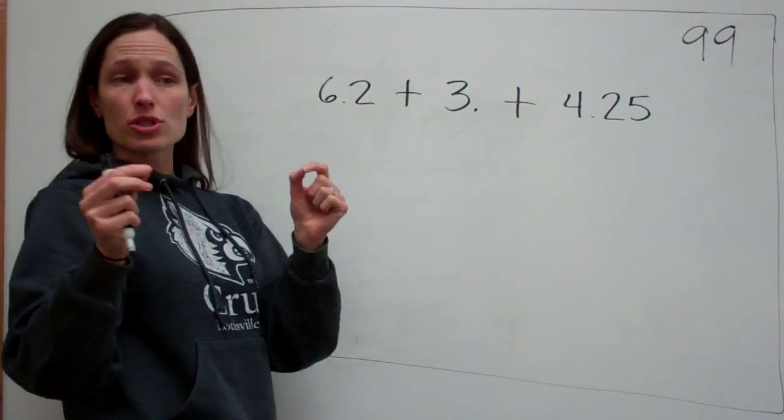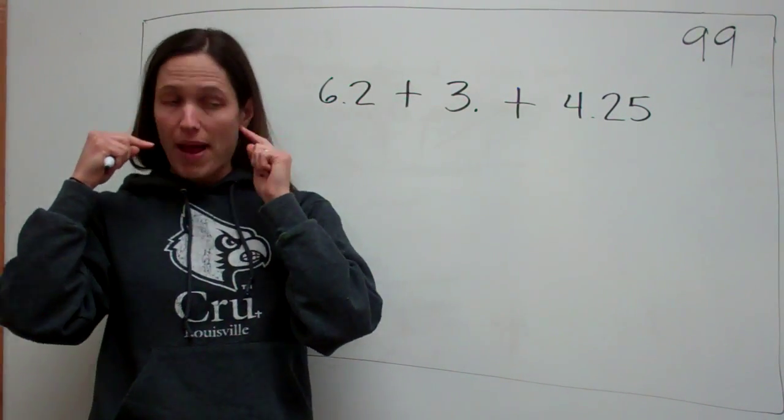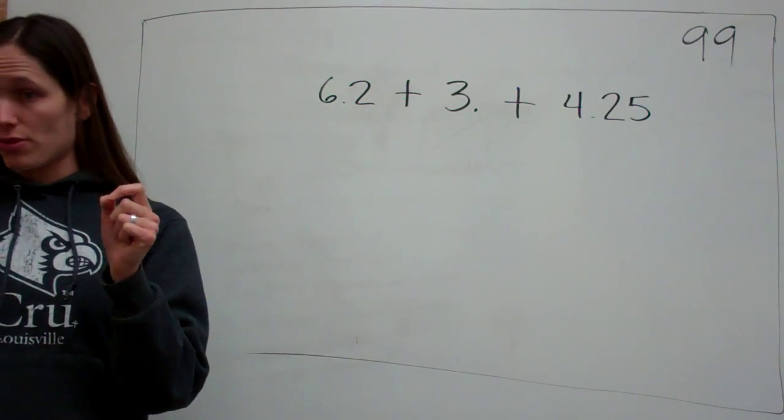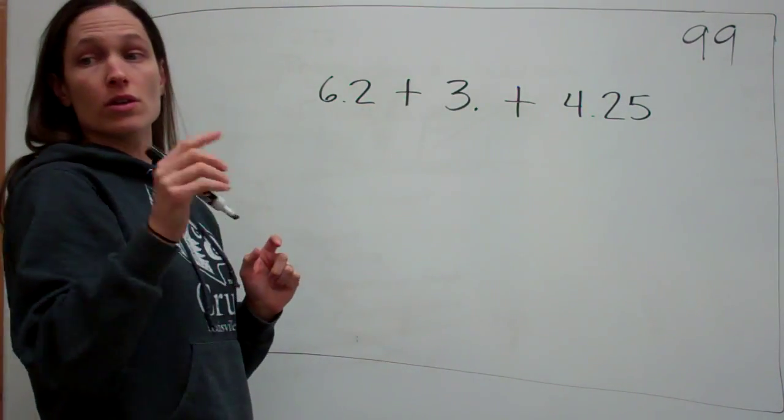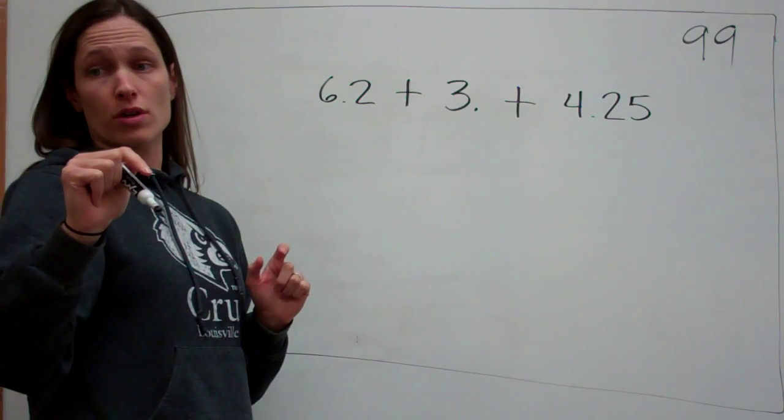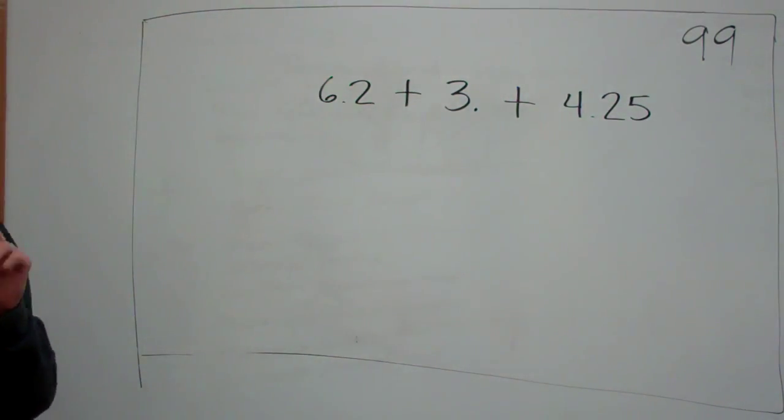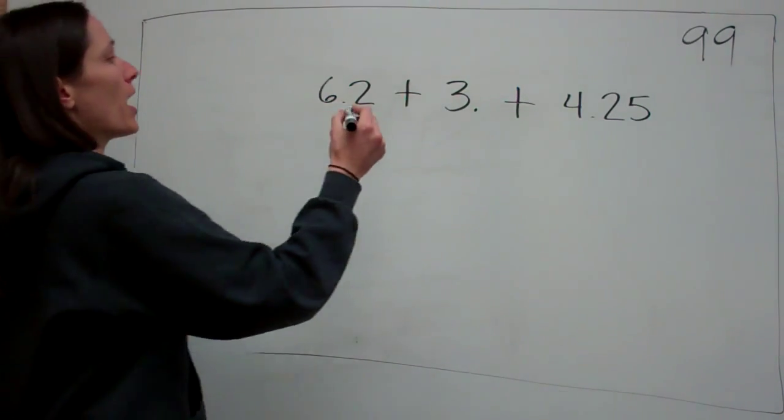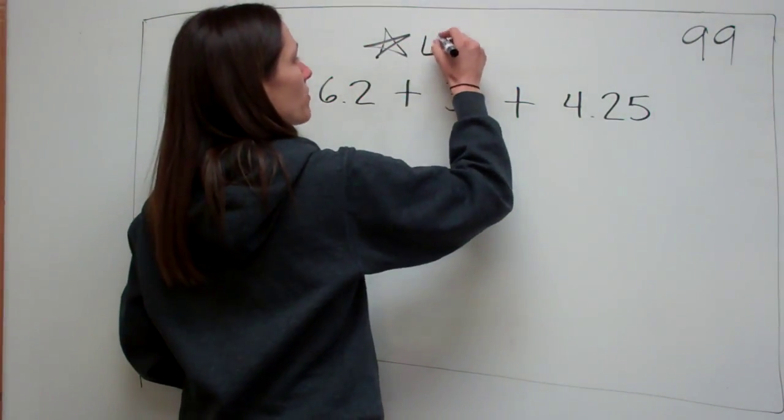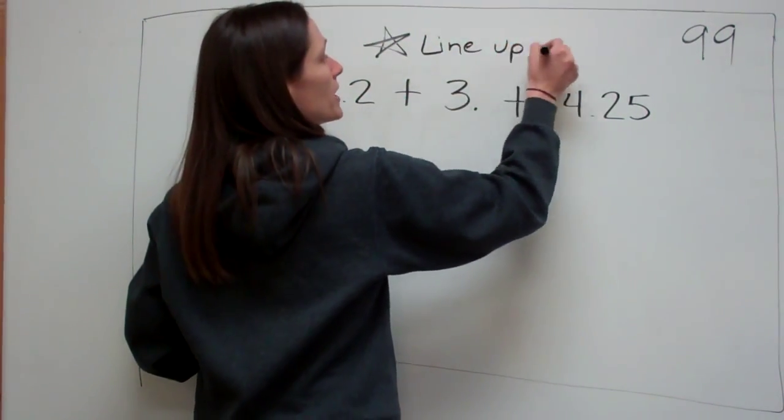What is the most important thing you can remember about adding or subtracting decimal numbers? The decimal. What about the decimal? To bring it down. Close. That is what you're supposed to do, but there's something else I'm looking for. What's important to do? To line up. Line them up. Most important thing to remember is that you line up decimals.